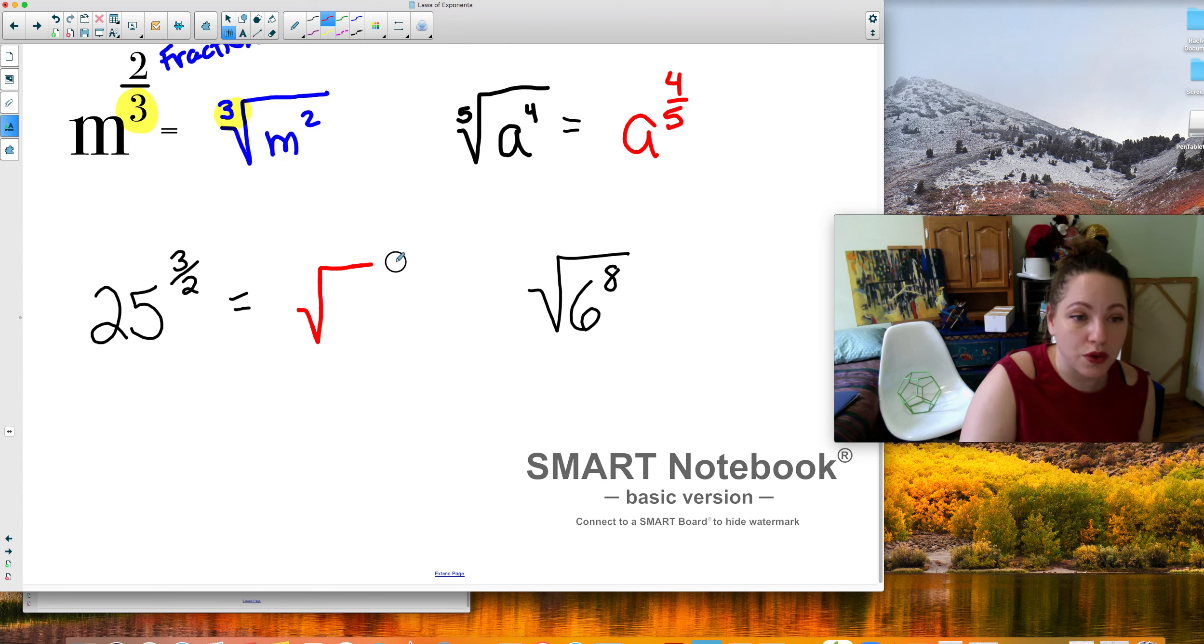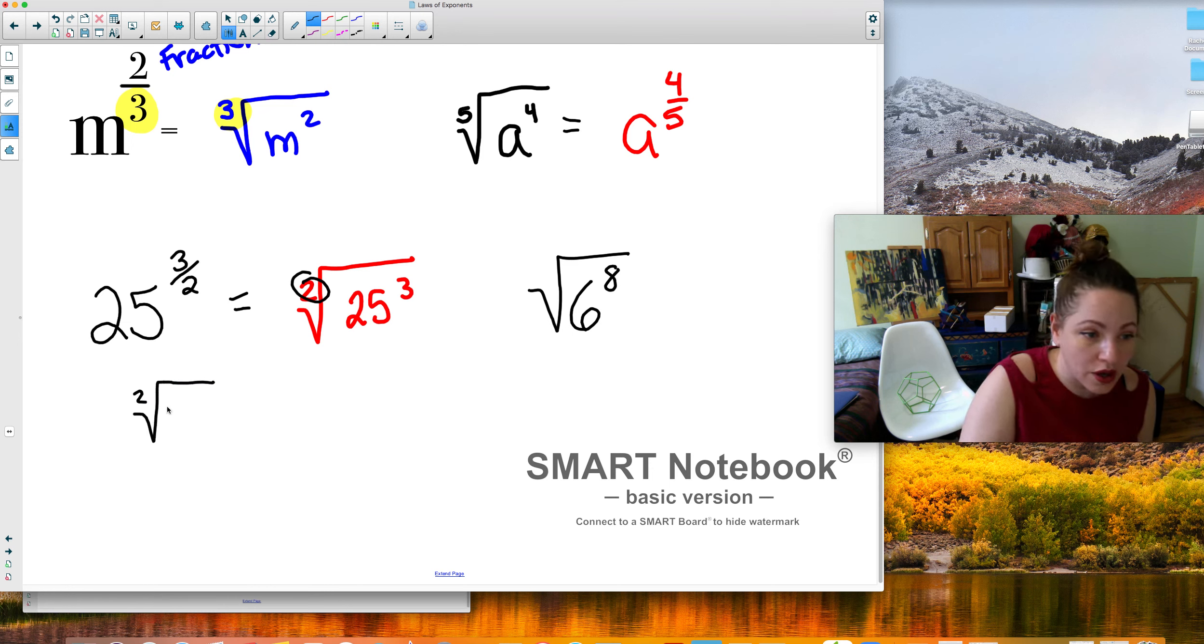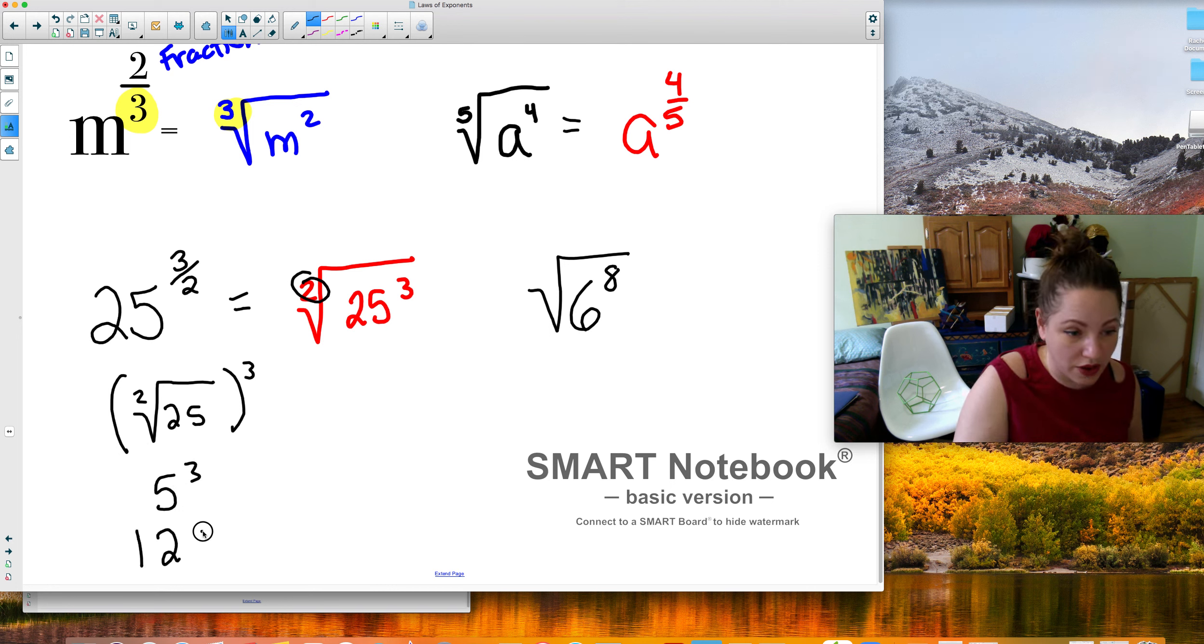Fractional exponent becomes a root. So the exponent stays on top. And the root goes on bottom. What does this mean? This means that I have to take the square root of 25 and I'm going to do that answer to the third power. It doesn't matter what order you go in. So I'll show you what I mean. We're going to do the square root of 25 and then I'm going to do to the third power. So the square root of 25 is 5 and 5 to the third power is 125.